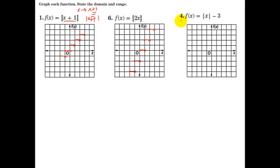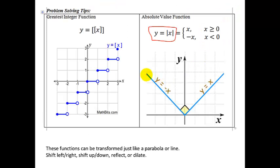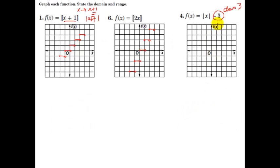Now we have an absolute value function. This notation means down by 3. The normal absolute value function is a V with slopes of 1 and negative 1 starting at the origin. I'm going to move it down 3 — start at the origin, go down 3, and draw in the V with slope 1 and slope negative 1. And there we go.